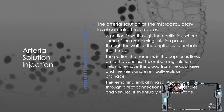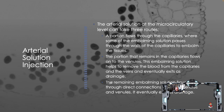The arterial solution at the microcirculatory level can take three routes. A portion flows through the capillaries where some of the embalming solution passes through the walls to embalm the tissues. The portion that remains in the capillaries flows immediately onto the venules, helping to remove blood and other products, and eventually exits as drainage. The remaining embalming solution flows through direct connections and eventually exits as drainage.